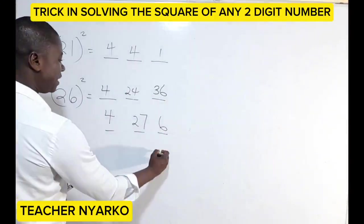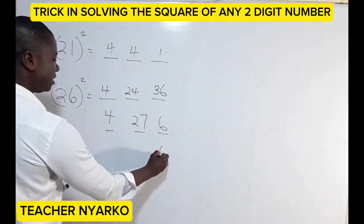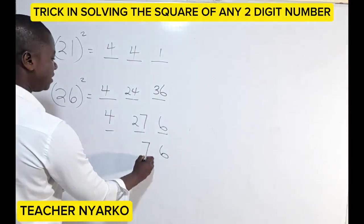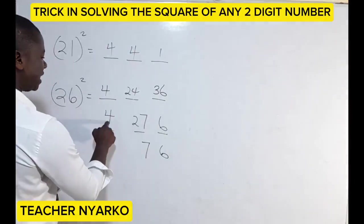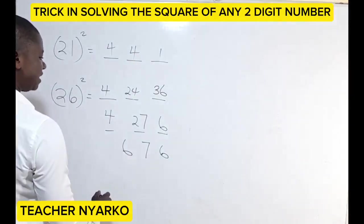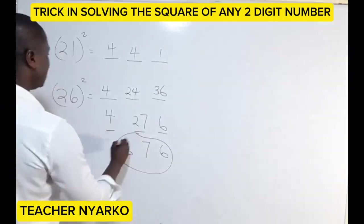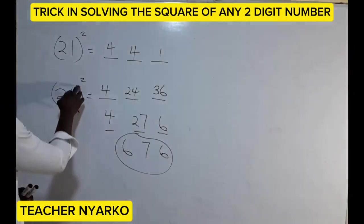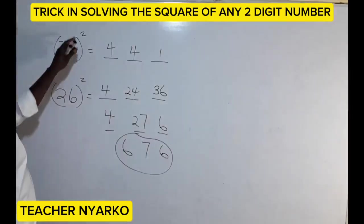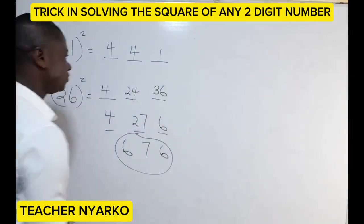This is still double, so we reduce further: six comes down here, the seven comes here, and the two is added to the four. We get 676 — so 26 squared equals 676, and 21 squared equals 441.